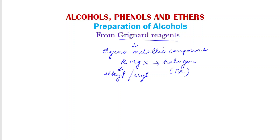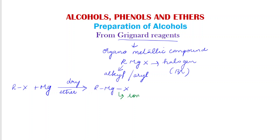The preparation of Grignard reagents we have already learnt in chapter 6. It is prepared by taking an alkyl or aryl halide with magnesium. RX will react with magnesium in the presence of dry ether, forming RMgX. The bond between magnesium and the halogen is always ionic in nature, whereas the bond between the alkyl or aryl carbon and magnesium is covalent but highly polar. Due to this, the electrons shared between carbon and magnesium are attracted mostly towards carbon, giving carbon a partial negative charge and magnesium a partial positive charge.